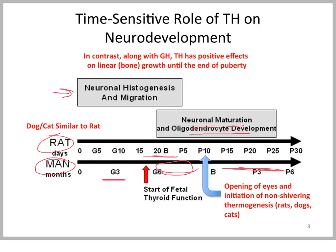In animals postnatally, at about day 10 in rats, dogs, and cats, they start to open their eyes and become capable of generating enough heat to be separate from the mother. Before that time, thyroid hormone levels are low. This is not true in humans, because activation of T4 to T3 has already occurred in the human fetus and newborn, but not in newborn dogs, cats, or rats.